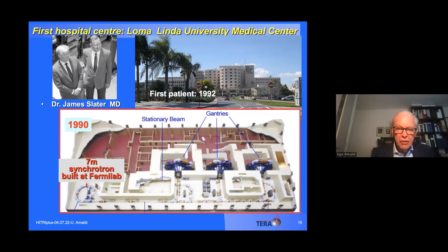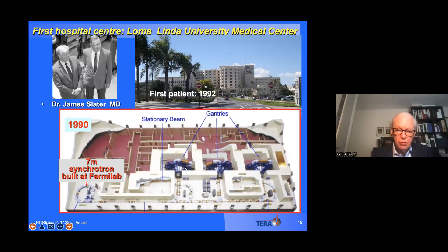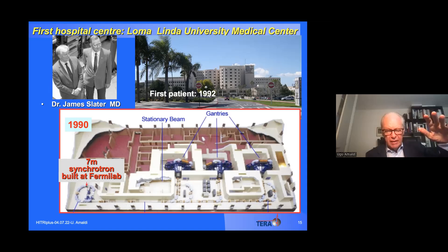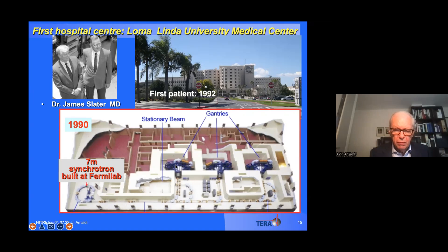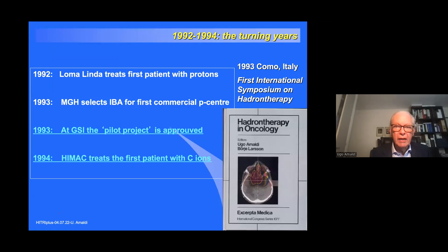In 1992 another very important event occurred: the first patient was treated at Loma Linda University Medical Center, built thanks to the drive of Dr. James Slater, who joined forces with Fermilab — the laboratory directed by Bob Wilson — which designed and built a seven-meter diameter synchrotron for the facility. It was the first facility to have gantries — large rotating metal structures with magnets that bring the beam to the patient from any angle — with three gantries treating patients ever since.